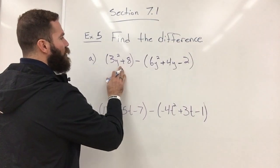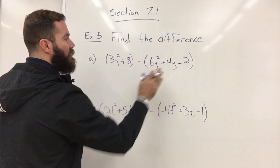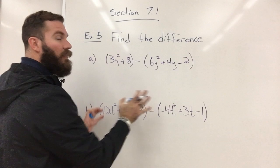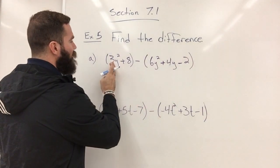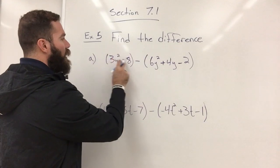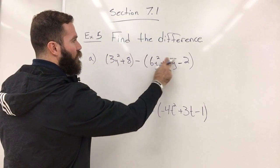To start, you always have to make sure that your polynomials are in standard form. Fortunately, these are already in standard form. Standard form is where it goes from the highest exponent, or the greatest power, to the lowest. So this is 2, 1, and there's none there.